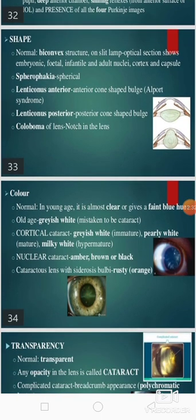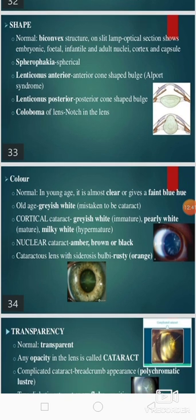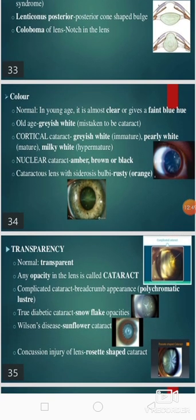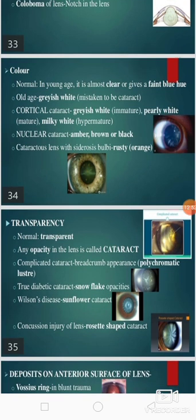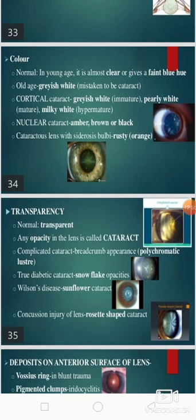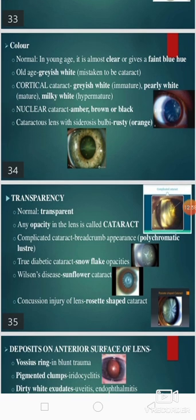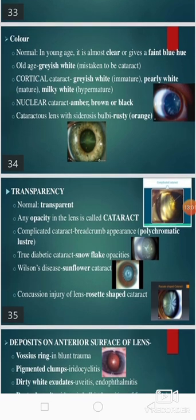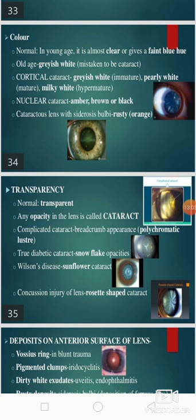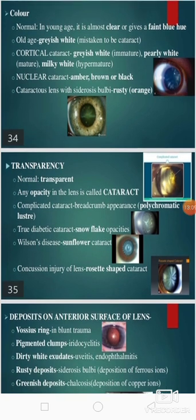We should see the shape of the lens. Normally it is a biconvex structure. Spherophakia is when it is spherical. Lenticonus anterior is when there is an anterior cone-shaped bulge; lenticonus posterior when there is a posterior cone-shaped bulge; and coloboma of lens when there is a notch. Then we should see the color of the lens — in younger patients it is almost clear or gives a faint blue hue; in old age there is a grayish white lens. In cortical cataract there is grayish white, pearly white, or milky white depending on maturity, and in nuclear cataract there is amber, brown, or black color.